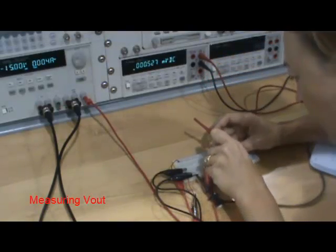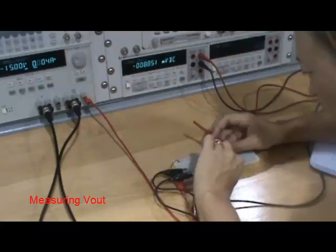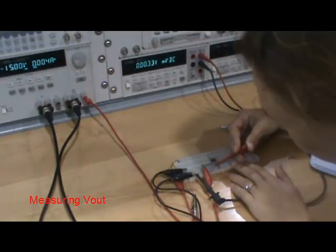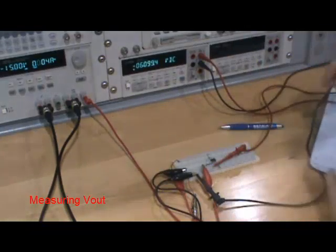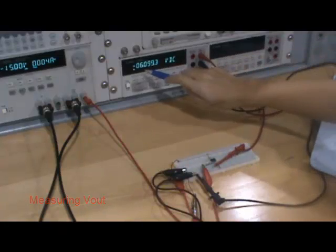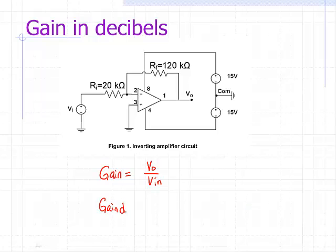Since this is an inverting op-amp, the linear gain should be negative. More typically, gain is reported in units of decibels. To convert the gain to decibels, take the absolute value of the linear gain, and then compute the log base 10 and multiply by 20.